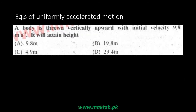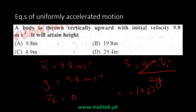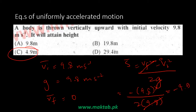For example: a body is thrown vertically upward with initial velocity 9.8 m/s. Acceleration due to gravity is 9.8 m/s² downward. At maximum height, the body momentarily stops, so final velocity is zero. We use the fourth equation: S = (VF² − VI²) / 2a. Substituting: S = −(9.8)² / (2 × −9.8) = 9.8/2 = 4.9 m. The answer is C: 4.9 m.